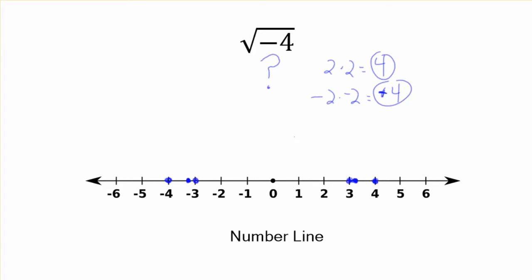Here's the big problem. There is no number on the number line, the whole number line, that is the square root of negative 4. There is no real square root. It's an imaginary number.